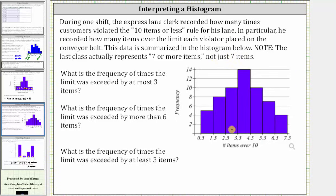Looking at the horizontal axis, we know we can't have a decimal or fraction part of an item, and therefore this first bar represents one item over the limit, the second bar represents two items over the limit, and so on. But we are told this last bar does not represent just seven items over the limit, it's seven or more, which we'll indicate as seven plus.